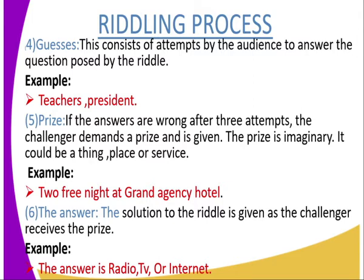If the audience does not get the answer in the fourth stage, we move to the fifth stage, which consists of the challenger demanding a prize. Because the audience did not get the answer, the challenger is going to demand a prize, which can be a thing, a place, or a service. It can also be imaginary — it depends on the challenger.